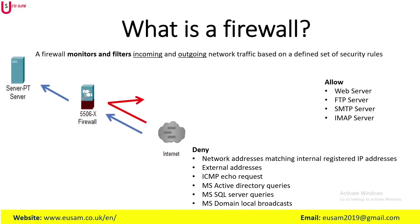At the same time, based on a set of rules, we can use the firewall to prevent unauthorized access, block malicious attacks, and help enforce security policy to a network by denying access. One possible way traffic could be denied is inbound traffic with network addresses matching internal registered IP addresses — that is, the firewall is configured to block any incoming data packet that claims to originate from an IP address within your own private network.